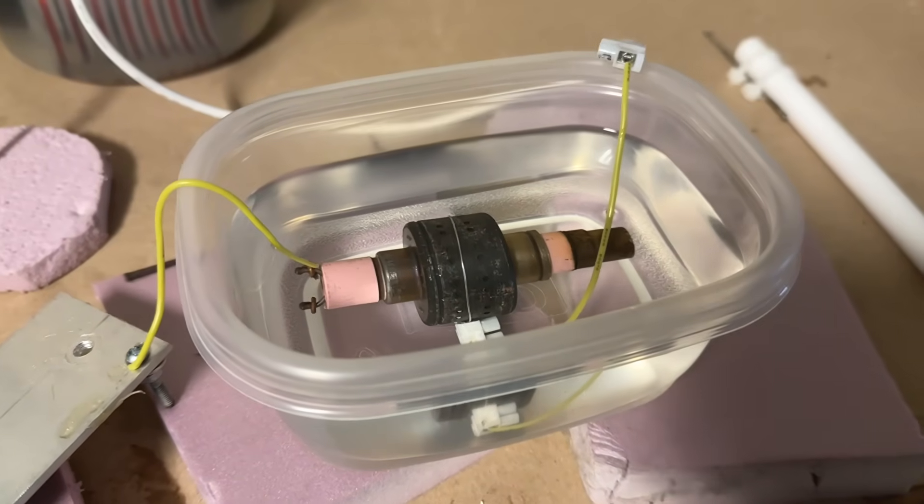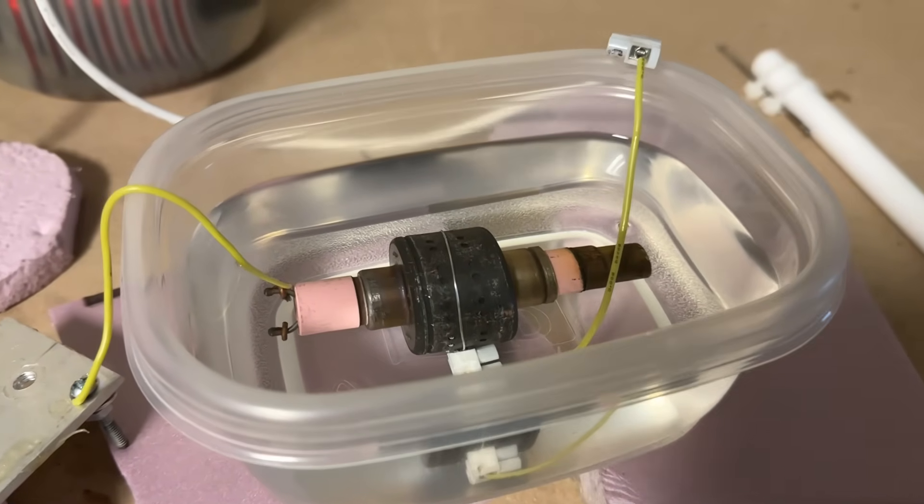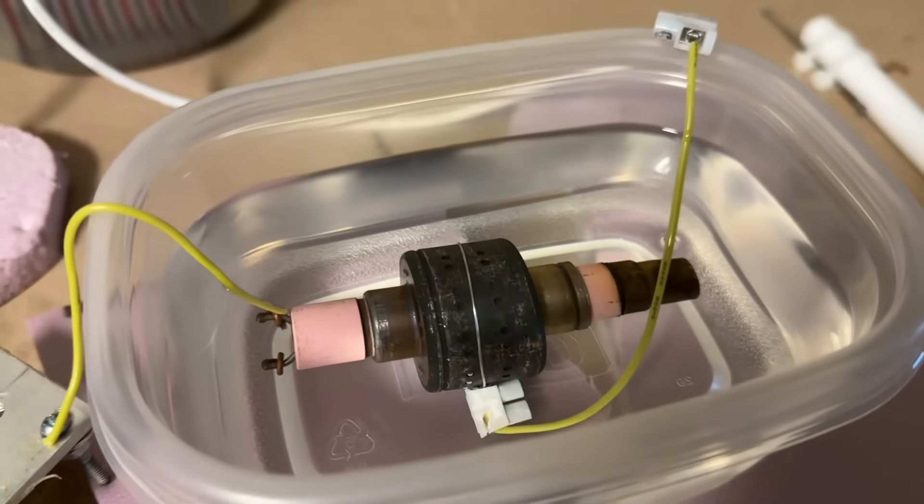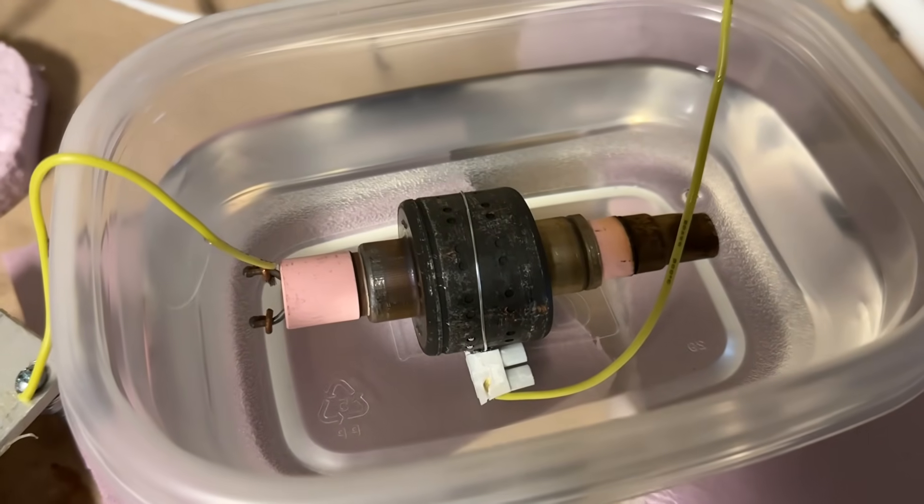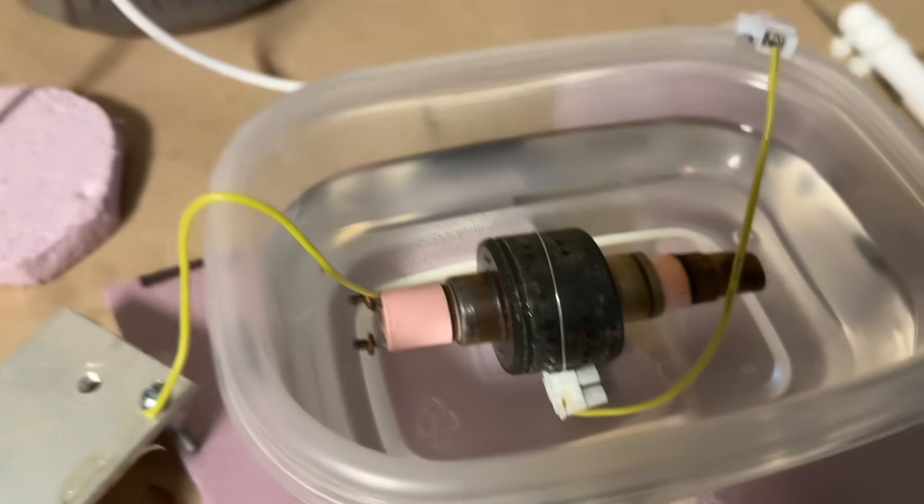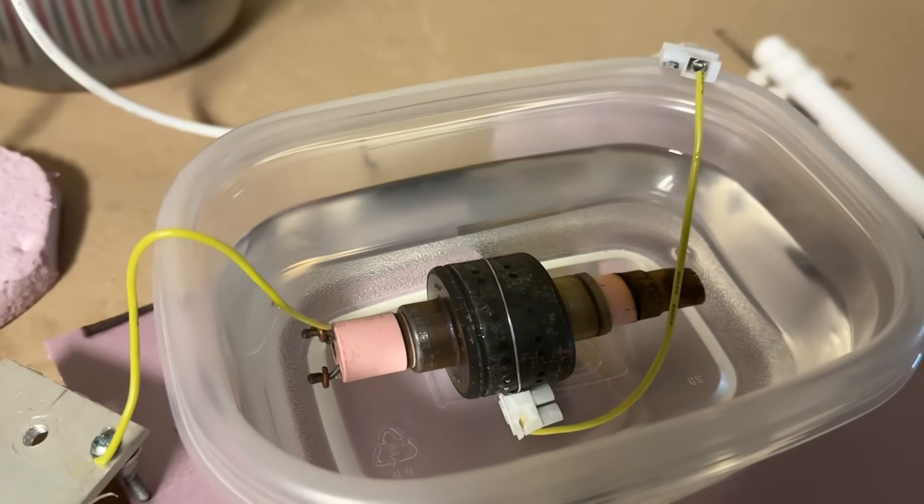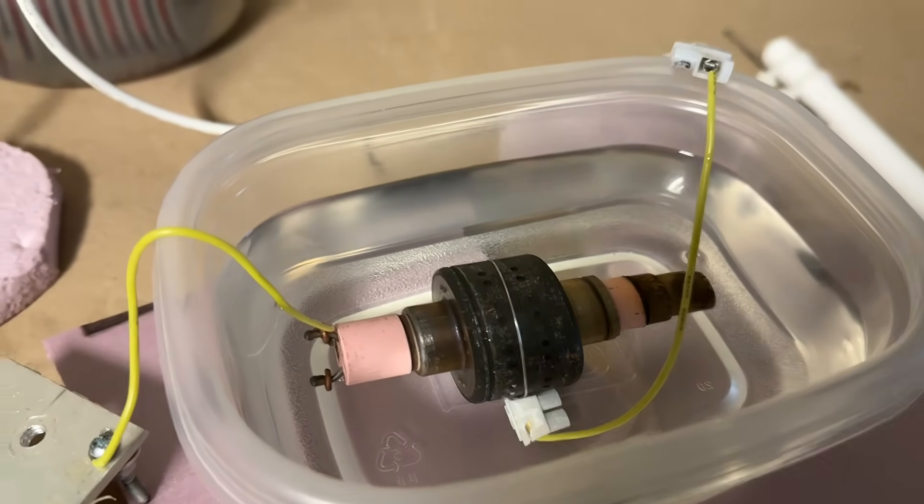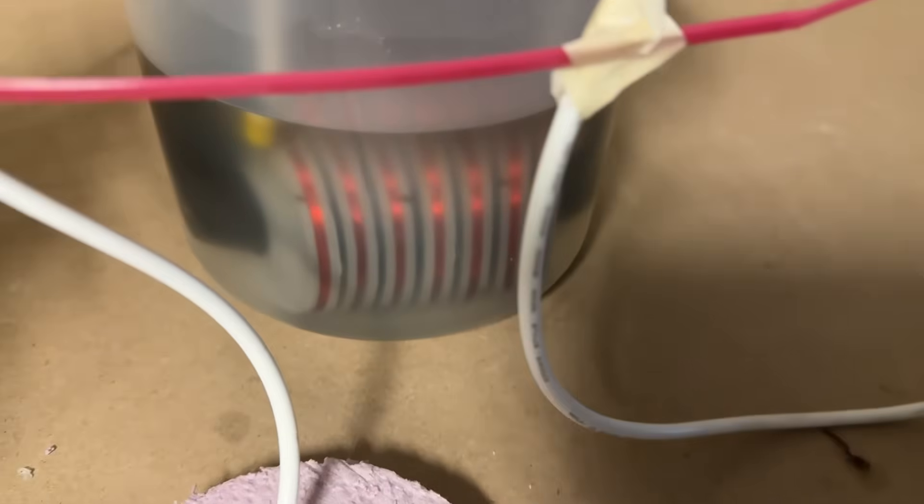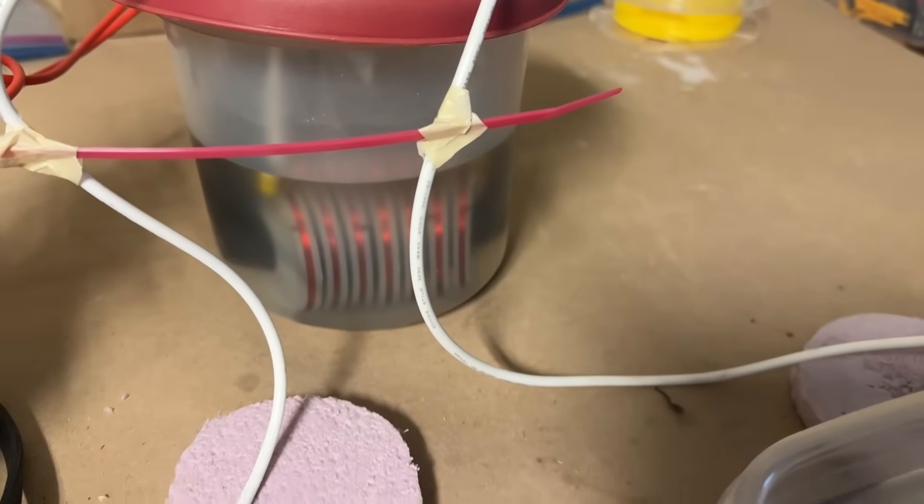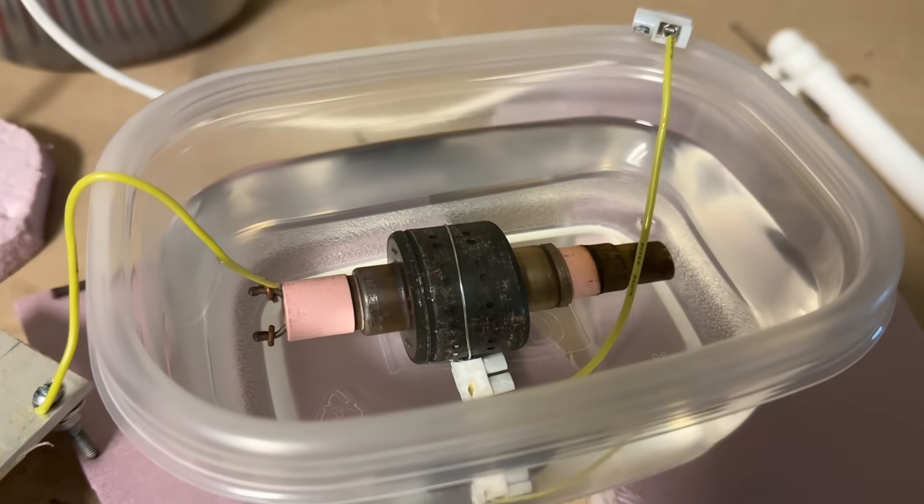Have you ever wondered what would happen if you take a magnetron, remove the magnets, submerge it under oil, and then run high voltage alternating current into it from a high frequency, high power flyback transformer? Stay tuned to find out.